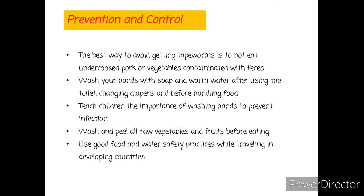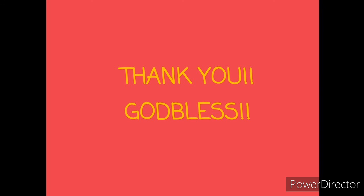The best way to avoid getting tapeworms is not to eat undercooked pork or vegetables contaminated with feces. Wash your hands with soap and warm water after using the toilet, changing diapers, and before handling food. We should also teach children the importance of washing hands to prevent infection. Wash and peel all raw vegetables and fruits before eating. Use good food and water safety practices while traveling in developing countries. We should always remember that prevention is better than cure.